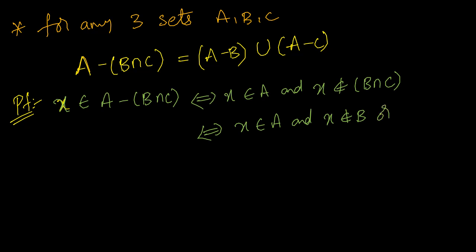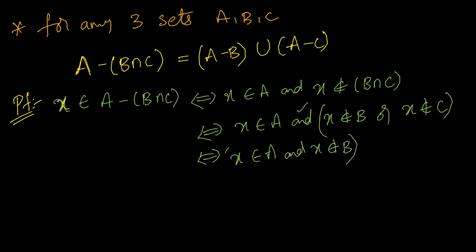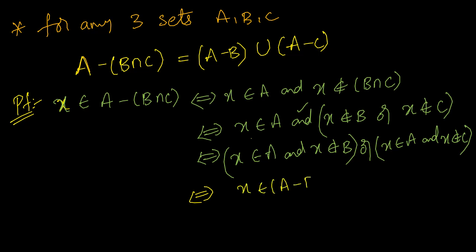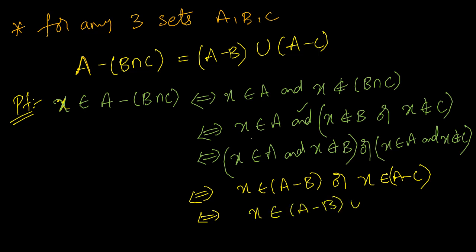Applying 'does not belong to' to B intersection C: intersection changes to or, so x does not belong to B or x does not belong to C. Combined with x belongs to A, we get: (x belongs to A and x does not belong to B) or (x belongs to A and x does not belong to C).